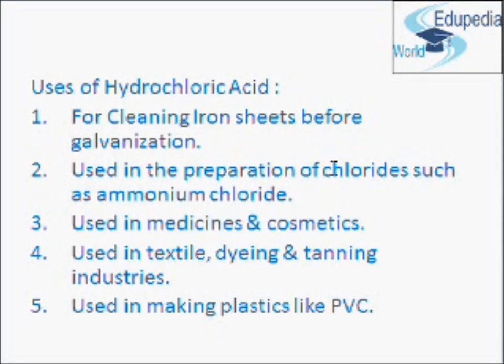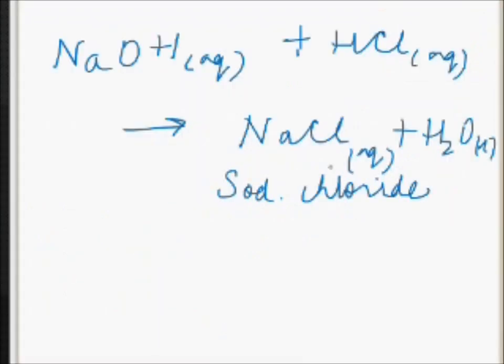The two products of the chloralkali process — sodium hydroxide and chlorine — combine together to produce another chemical called sodium hypochlorite. Sodium hypochlorite is a bleaching agent which is used in making household bleaches and for bleaching and washing fabrics. The chemical formula is NaClO.